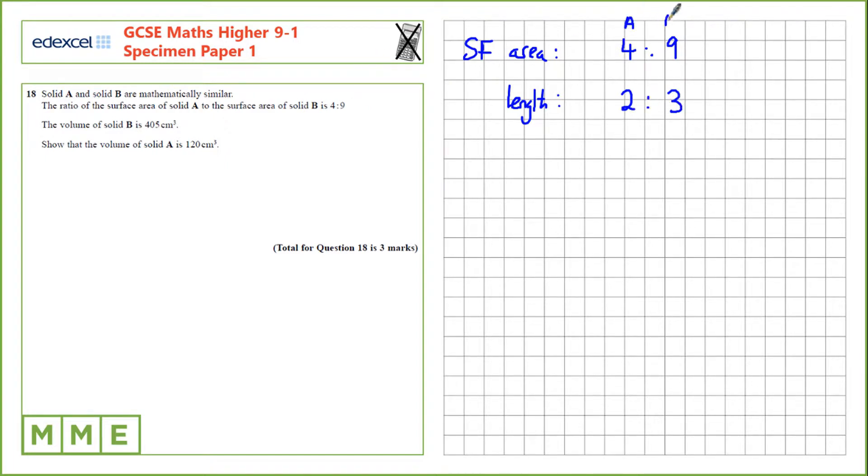And this here is A to B. If we have the scale factor for length, we can figure out the scale factor for volume by cubing. So 2 cubed is 8, and 3 cubed is 27.